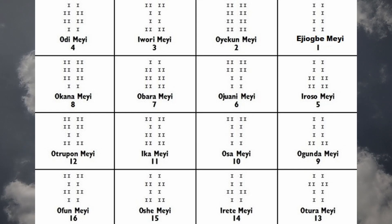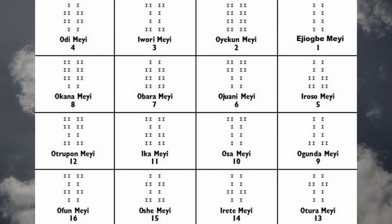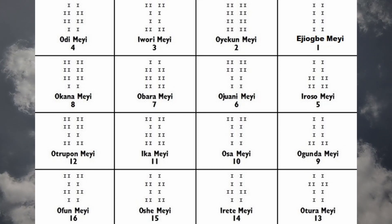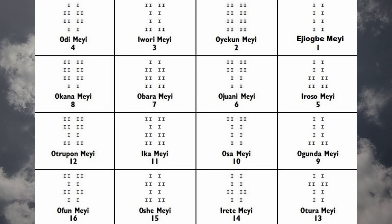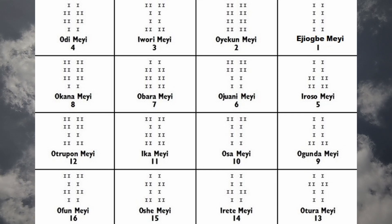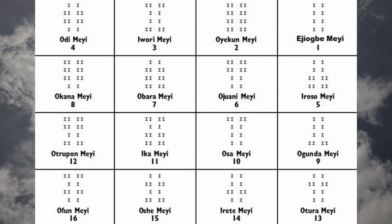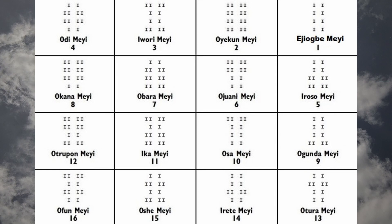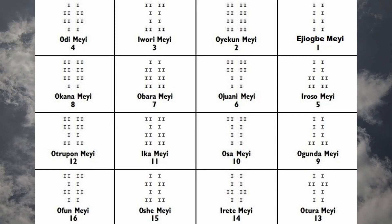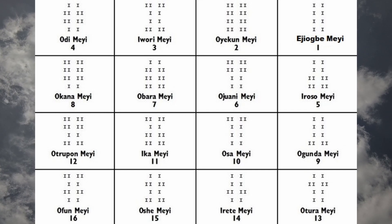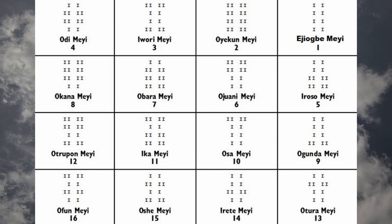Starting with the first Odu, top right, is Yobi Meyi. Odu number 2, Oyekun Meyi. Number 3, Iwori Meyi. Number 4, Odi Meyi. Number 5, Iroso Meyi. Number 6, Ojuani Meyi. Number 7, Oubara Meyi. Number 8, Ogana Meyi. Number 9, Ogunda Meyi. Number 10, Osa Meyi. Number 11, Ika Meyi. Number 12, Otrupon Meyi. Number 13, Otura Meyi. Number 14, Irete Meyi. Number 15, Oshe Meyi. Number 16, Ofun Meyi.